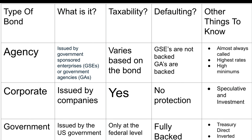For the last of our three types of bonds, we have treasuries or government bonds. These are issued by the U.S. government and are fully backed by the U.S. government, meaning if they do default, you will get your money back. In terms of taxability, they are only taxable at the federal level, so if you live in a state with a higher income tax, this could make a big difference for you.